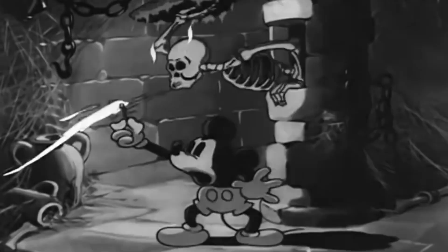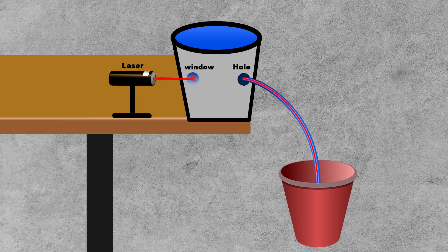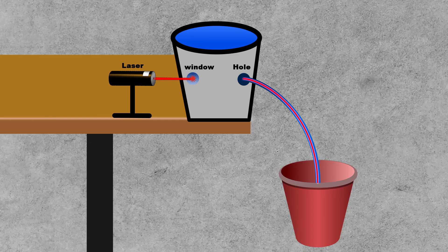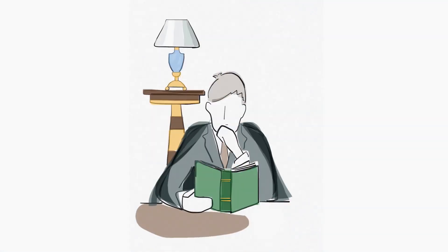If done correctly in a dim environment you will witness light follow the water's curvy path all the way down to the bucket as if you were pouring light. So why does it work?